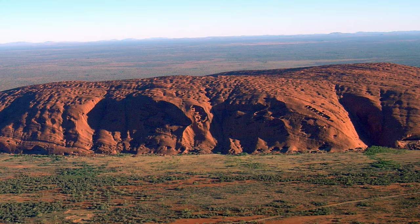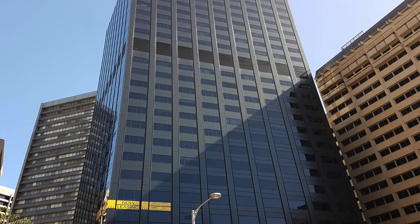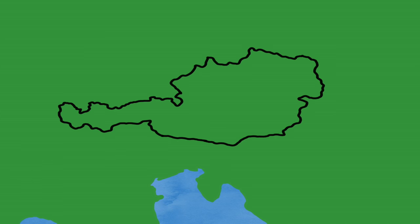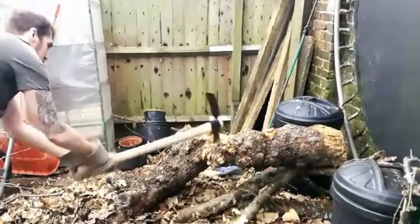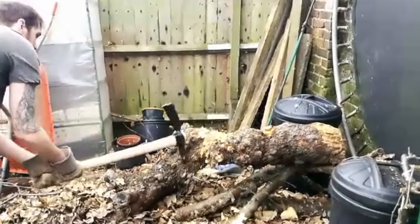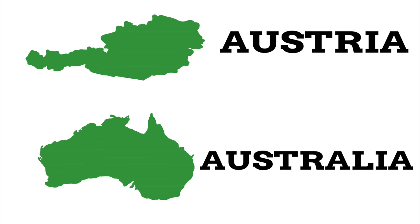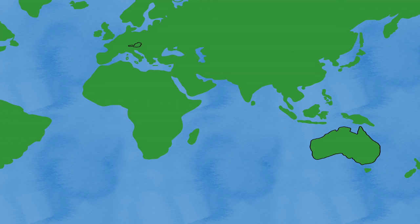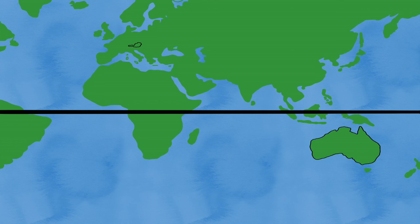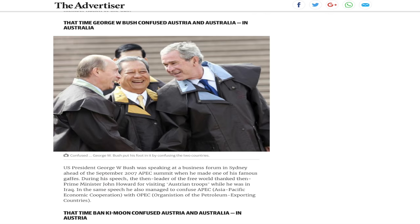Australia, the home of big rocks, black stumps and chaswassers. Austria however is the home of Freud, Mozart and slow motion. It would be a safe assumption to say that these countries don't have the most in common, yet they have one thing very much in common: their names. How do two countries in different hemispheres end up having names so similar that even certain world leaders can get them mixed up?